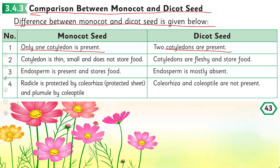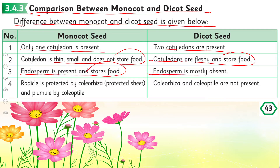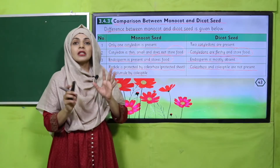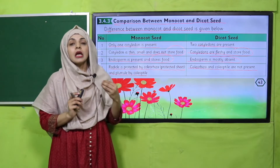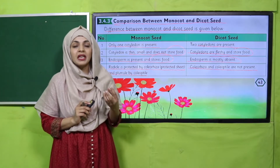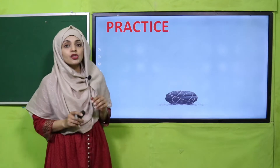Monocot has only one cotyledon; dicot has two cotyledons. The monocot cotyledon is thin, small, and does not store food. In dicots, the cotyledons are fleshy and store food. Endosperm is present and stores food in monocots; endosperm is mostly absent in dicots. The monocot radicle is protected by coleorhiza and plumule by coleoptile, whereas coleorhiza and coleoptile are absent in dicots. Examples of monocots: corn and maize. Examples of dicots: peas, red beans, and chickpeas.